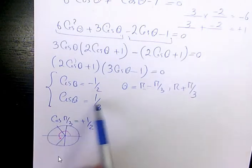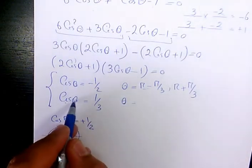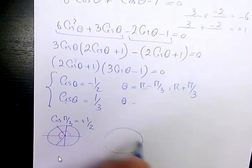Now, what about this second part? The second part, cosine is positive, so the answer must be in quadrant 1 and quadrant 4.